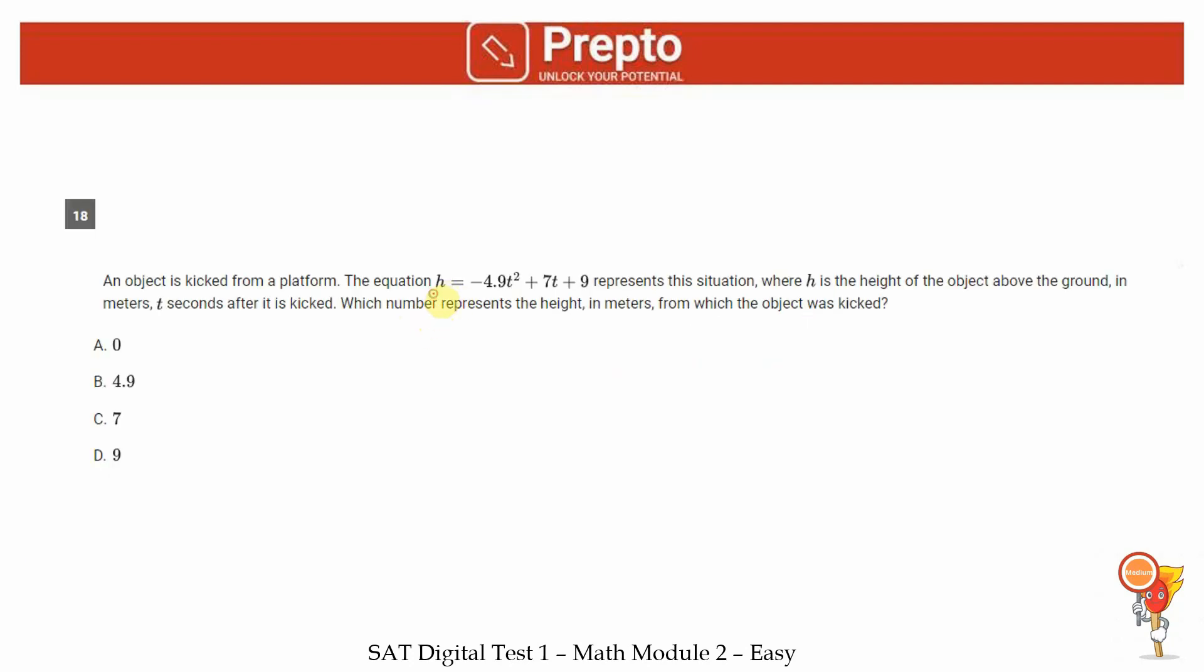An object is kicked from a platform. h equals minus 4.9 times t squared plus 7t plus 9. h is the height of the object above the ground, t seconds after it is kicked. So t here in this equation is the number of seconds after kicking. It's not a very difficult question, but the quadratic part may make it look more difficult. Our question is which number represents the height from which the object was kicked. If the object is just going to be kicked, the time is 0 because the object has not yet been kicked. If I substitute time as 0, I will get the height that the object is in meters. Time as 0 gives us h equals 9. So the object is 9 meters above the ground, option D.